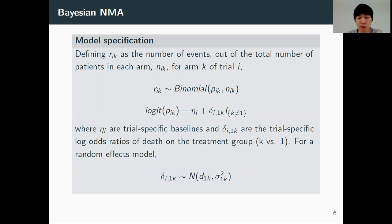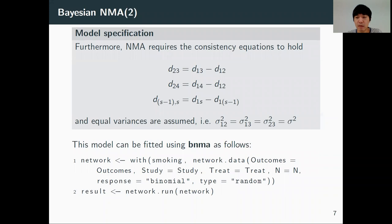For a random effect, we can model the delta_i1k with a normal distribution with average treatment effect D and heterogeneity parameter sigma squared. NMA requires consistency equations to hold, and equal variances are commonly assumed.